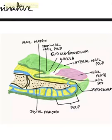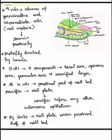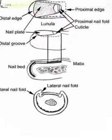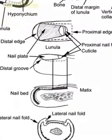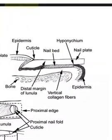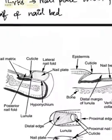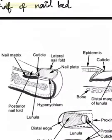We can also see the lateral nail plate, the hyponychium immediately beneath the nail plate, the lateral nail fold, the proximal nail fold, and the cuticle. The cuticle is the tissue present distal to the eponychium in contact with the nail plate.